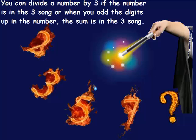You can divide a number by 3 if the number is in the 3 song. Let's say 15. 3, 6, 9, 12, 15. Then it's divisible by 3. Or if the number is bigger than the numbers in the song, you can add the digits up in the number and see if the sum is in the 3 song.